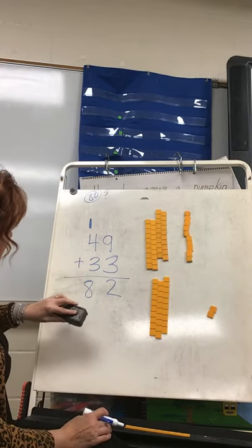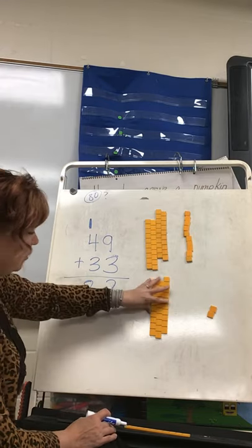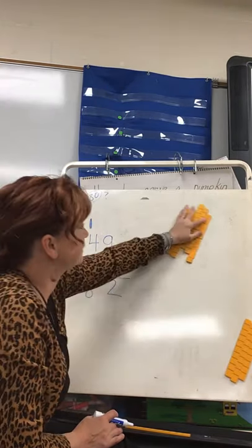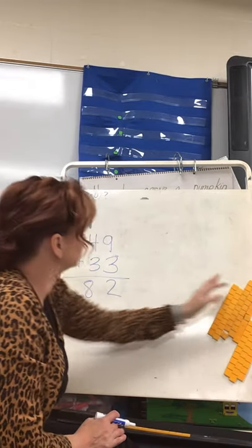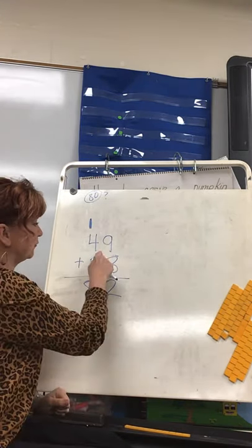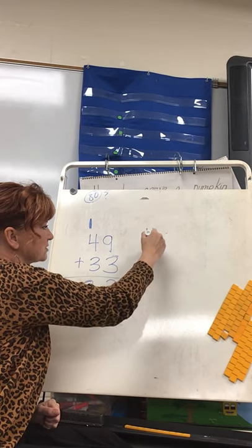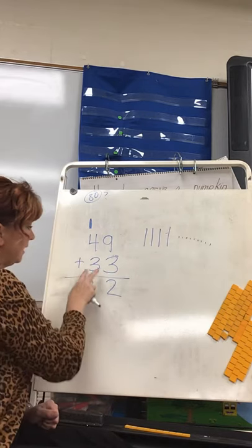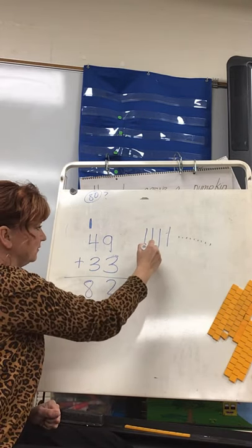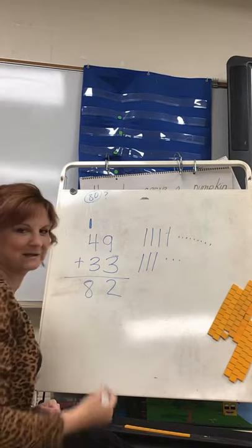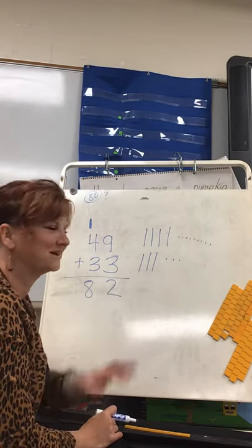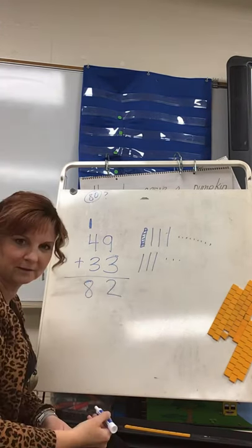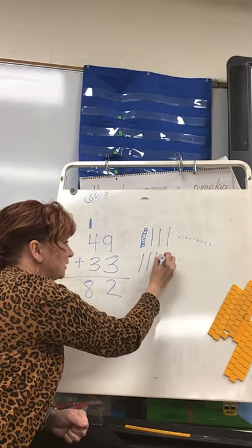Now let's pretend we're at home and don't have our tens and ones manipulatives, so let's try drawing it. For 49, you can draw sticks: 10, 20, 30, 40, and 1, 2, 3, 4, 5, 6, 7, 8, 9. Then for 33: 10, 20, 30, 31, 32, 33. You can draw them like french fries because there are 10 little ones inside.